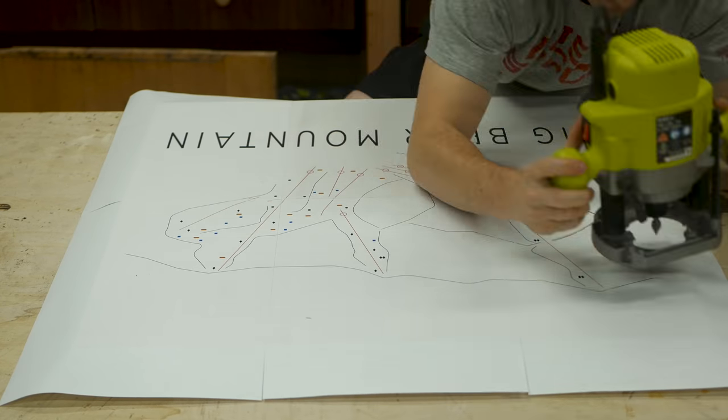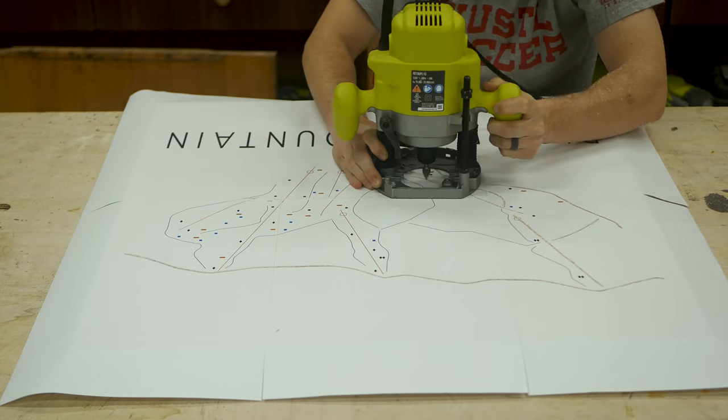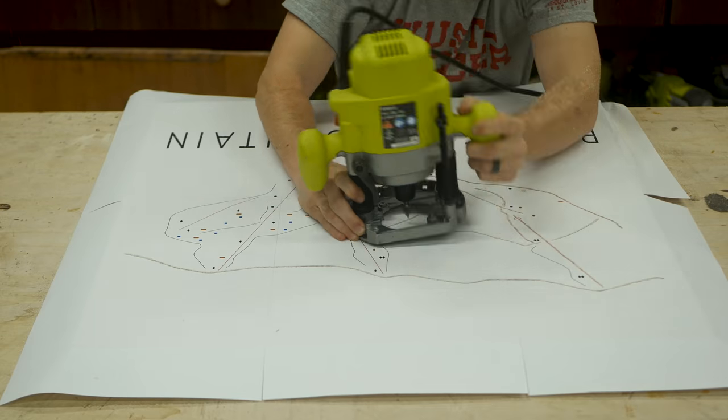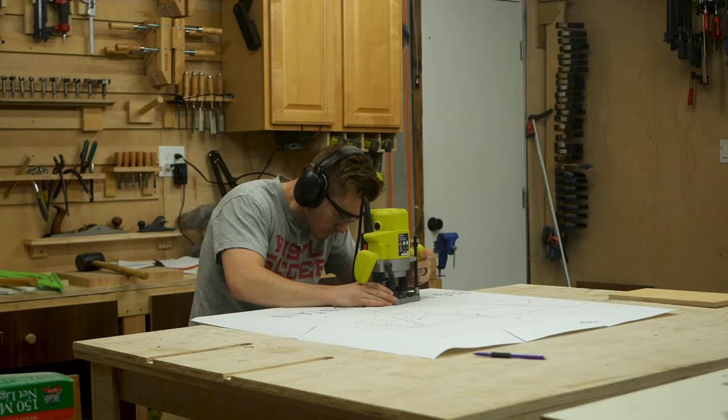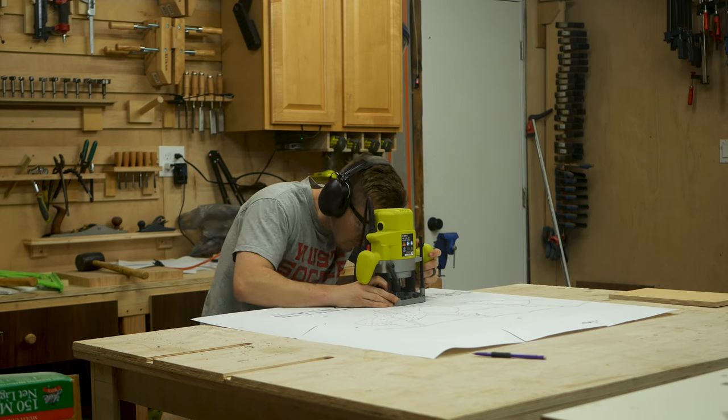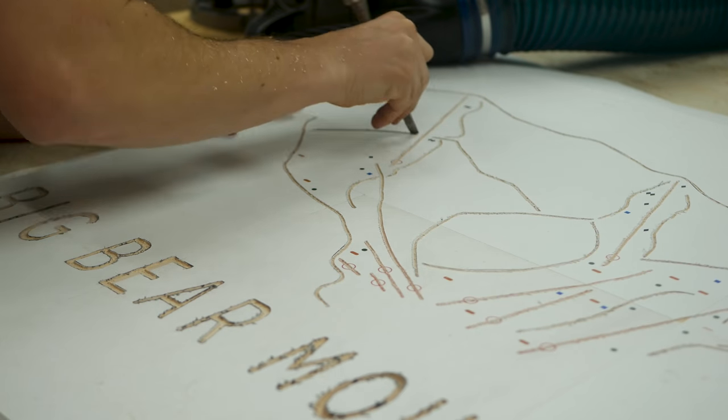Once I had done my test cuts there wasn't much left to do but go for it. All in all the routing of the main design took about 8 minutes as it only took a single pass. I then adjusted the depth slightly to more quickly route out the letters. This was a lot more time consuming but became easier the more I did it.